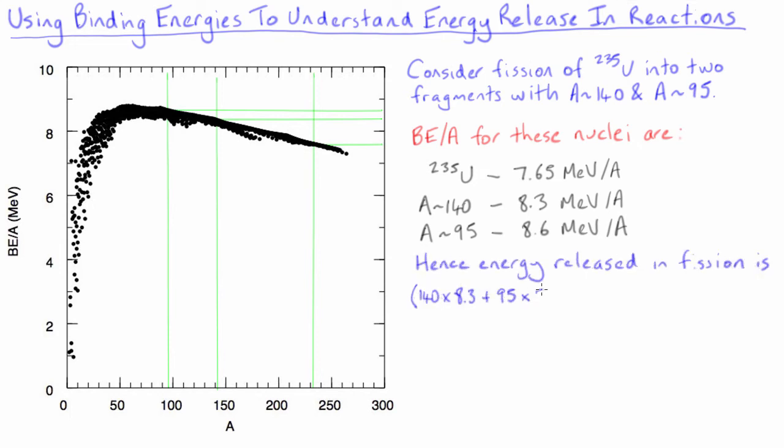Thus we predict that approximately 181 MeV of energy will be released from every uranium-235 atom that splits, and this number agrees quite well with the value deduced from the actual masses in earlier lectures.